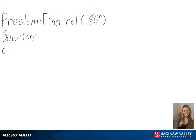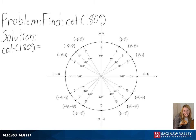Our problem is to find cotangent of 180 degrees. To solve this, we will be using the unit circle. We will start at (1, 0) and then move counterclockwise until we have rotated 180 degrees.